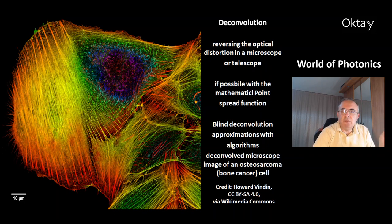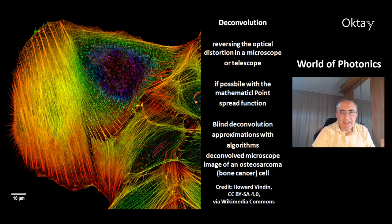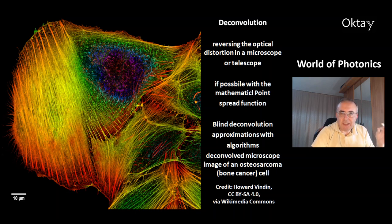This is called deconvolution — reversing the optical distortion in a microscope or telescope. Where possible, deconvolution can be done with a mathematical point spread function. There is also blind deconvolution, which uses approximations with algorithms. In this picture, these are deconvolved microscope images of an osteosarcoma, which is a bone cancer cell.